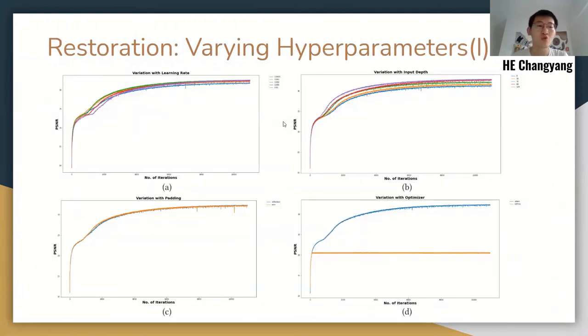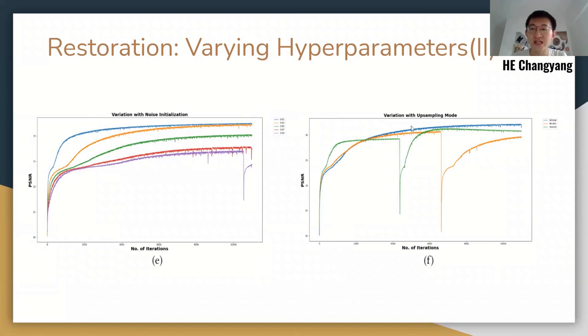For restoration, we also test the same hyperparameters. In addition to padding mode, restoration is also not sensitive to learning rate. For noise initialization and upsampling mode, you can find that when noise is large or inappropriate upsampling mode is used, the training process is not stable, with sudden drops after local optimal. It is only observed in restoration.